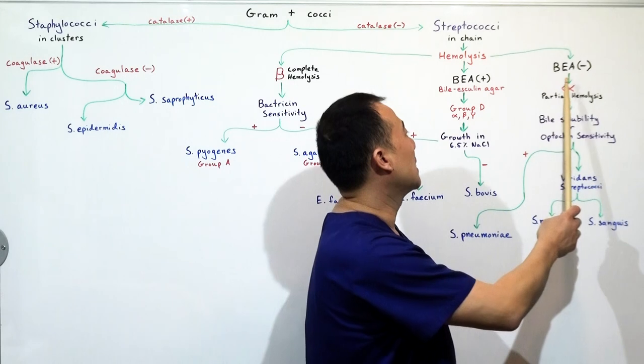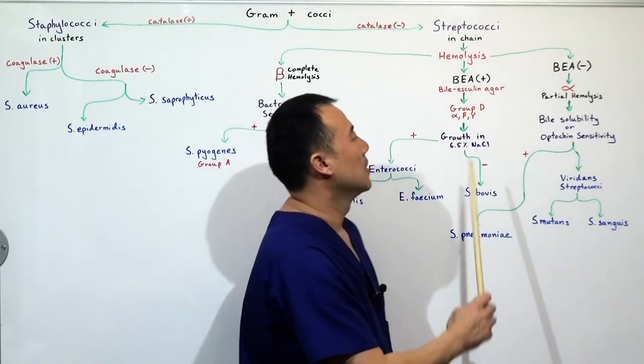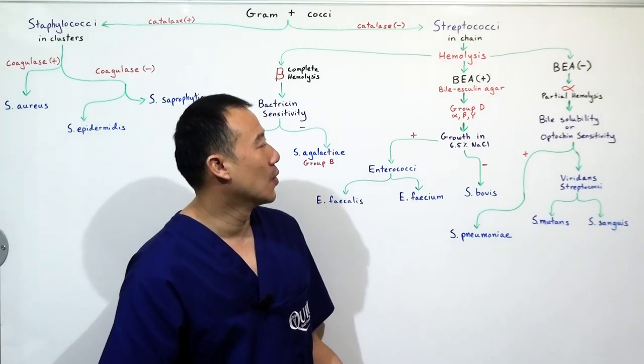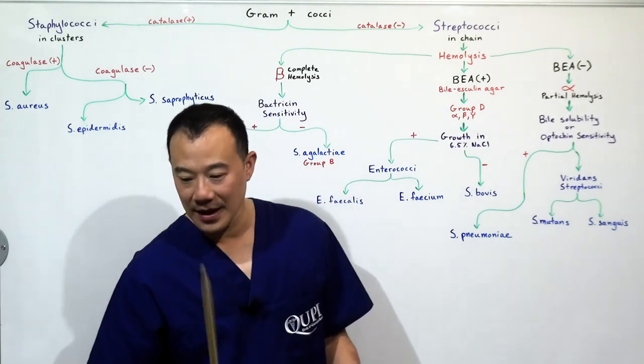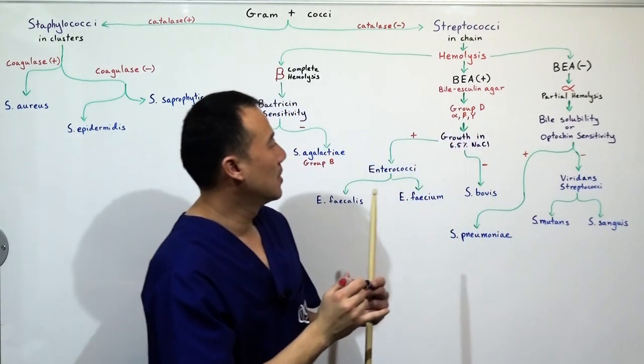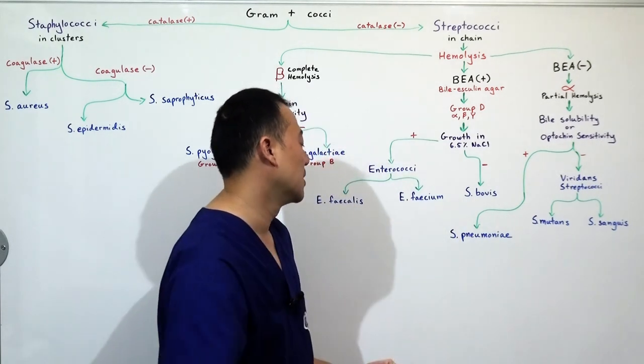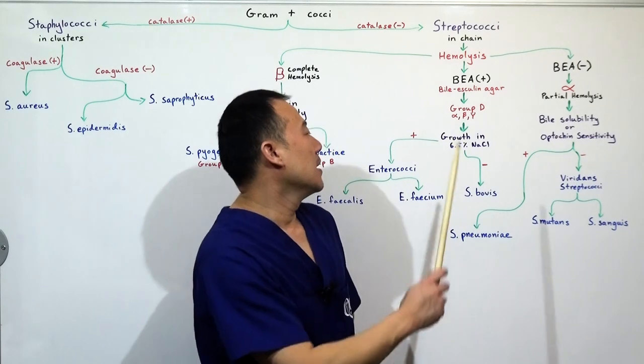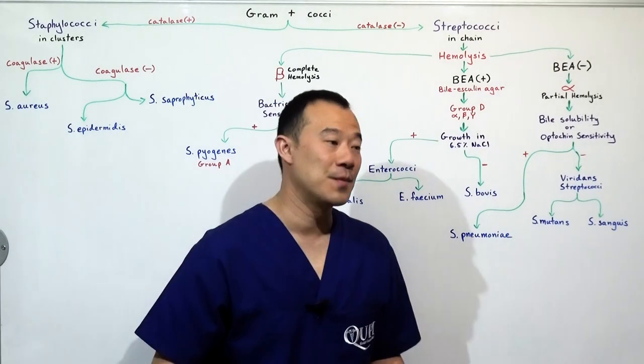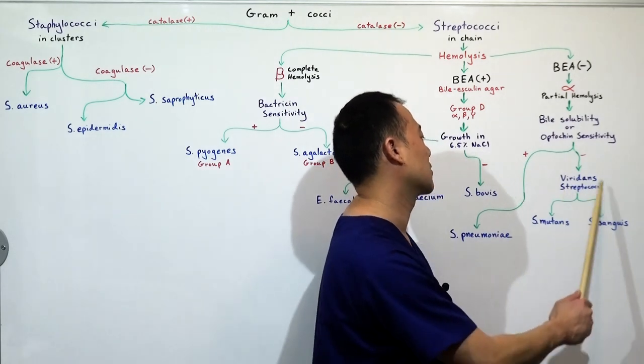Finally, if it's bile esculin agar negative and it's alpha, which is partial hemolysis, then these are your choices here. You must ask yourself, is it bile solubility or optochin sensitivity positive? If it's positive, the only choice in big letters is S. pneumoniae. If it's negative, then you've got the viridans streptococci, which doesn't show up on board exams that often, but they will throw it in there just to throw you off. Strep mutans and strep sanguis. These are the viridans streptococci.